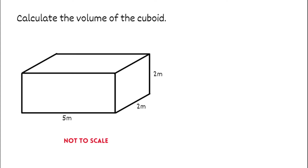So when we're dealing with volume, because we're working in three dimensions, our units — whatever we're working with — when we find the volume, will always be cubed. For this first question, we've got to calculate the volume of the cuboid. The formula to find the volume of any cuboid is simply length multiplied by width multiplied by height.